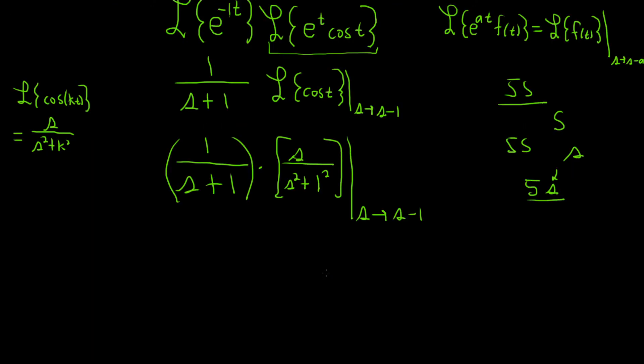Now we just make the substitution. So this is 1 over s plus 1, and then here it'll be s minus 1 over s minus 1 squared plus 1.